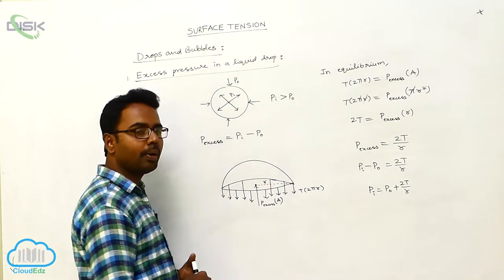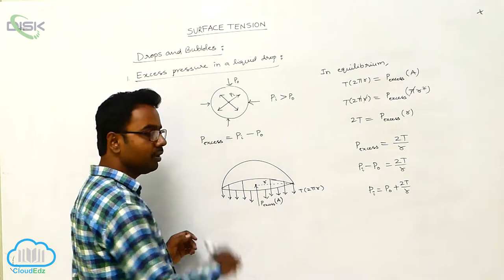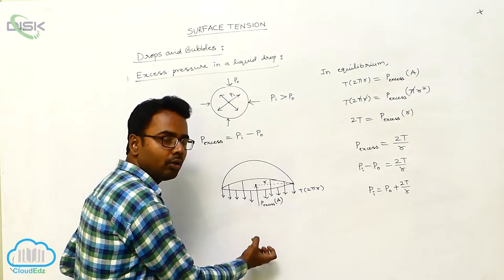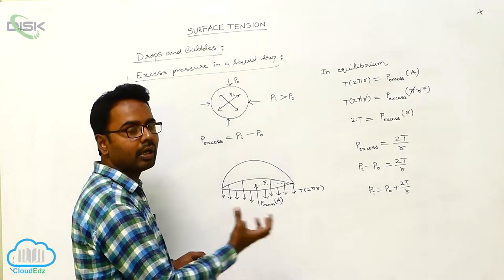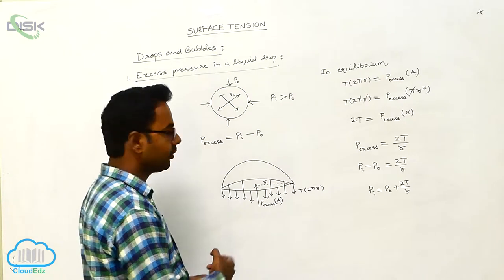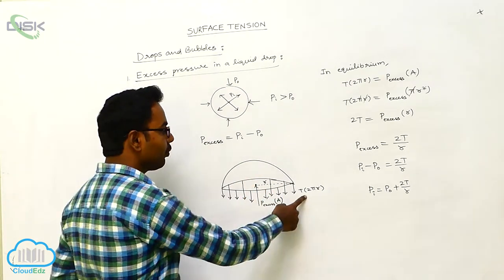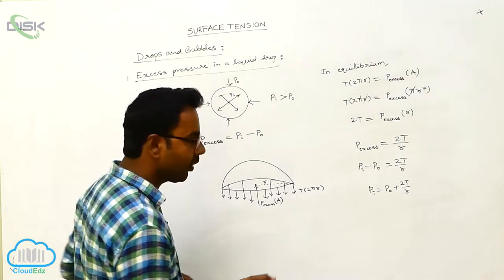Suppose we consider the upper half of the liquid drop. This upper half of the liquid drop is being pulled down by the lower half, and the lower half is being pulled up by the upper half. Now the upper half is being pulled down with how much force? With a force T into 2πr. How do you get this?